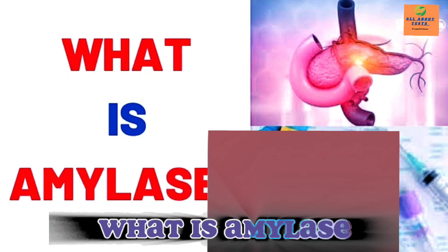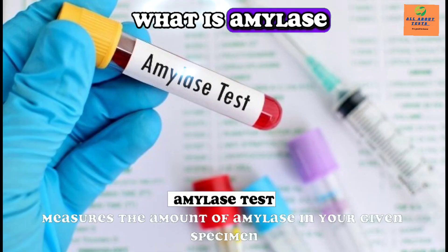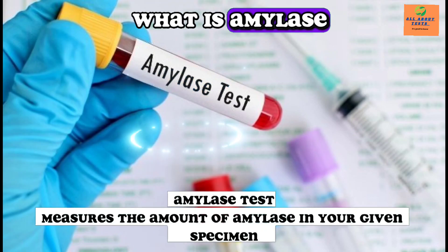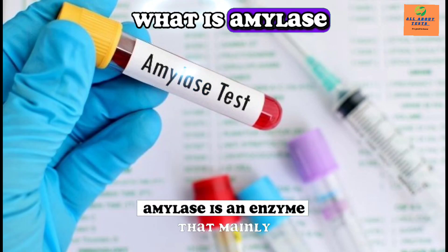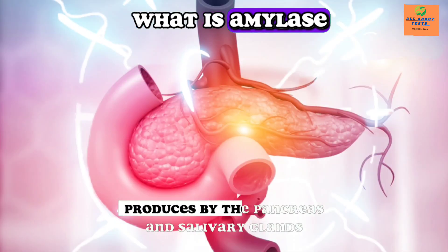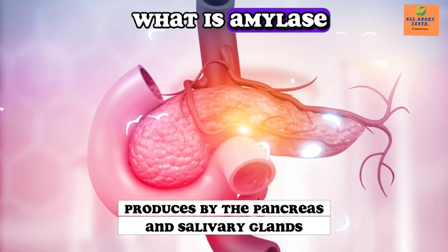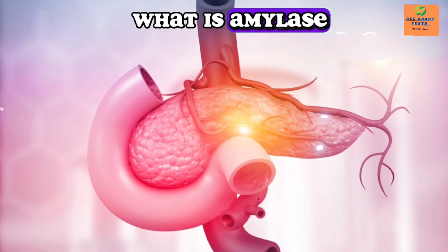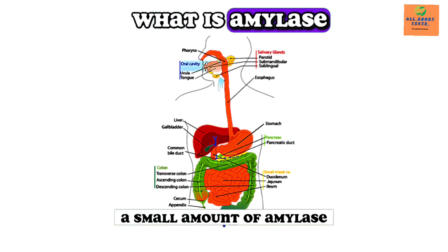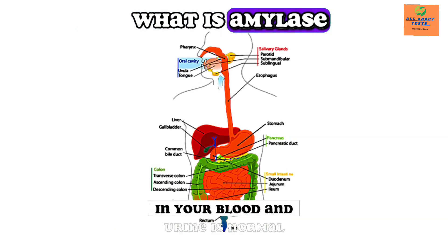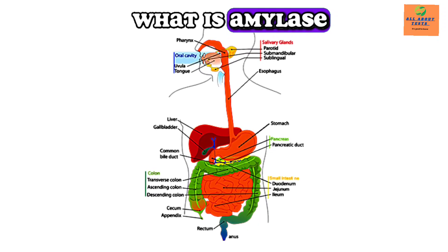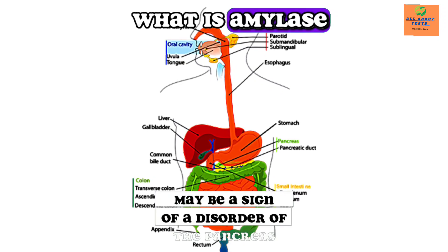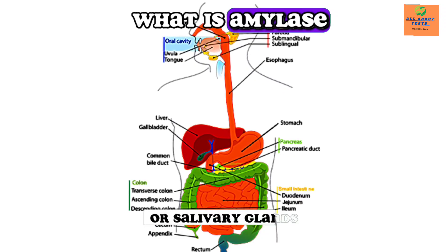What is amylase? The amylase test measures the amount of amylase in your given specimen. Amylase is an enzyme mainly produced by the pancreas and salivary glands, and is present in other tissues at minimal levels. A small amount of amylase in your blood and urine is normal, but having too much or too little may be a sign of a disorder of the pancreas or salivary glands, or another medical condition.